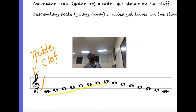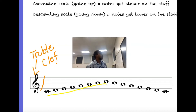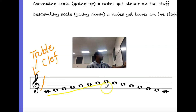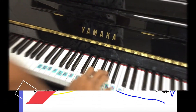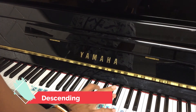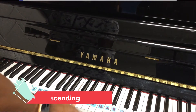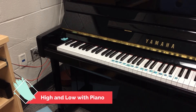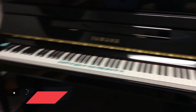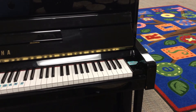Then we talk about descending — going down. When we have a descending scale, the notes are going to get lower on the staff. We'll take a new color and show them that these notes are going down on the staff, they're going lower. Then you will play your descending scale on the piano. Notes on the left of the piano are low; notes on the right side of the piano are high.